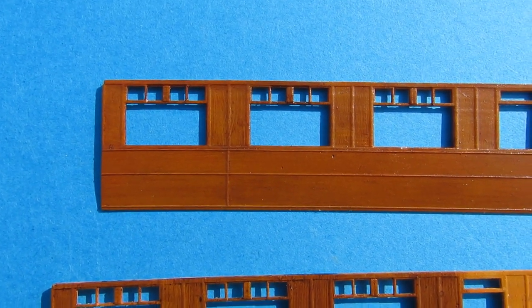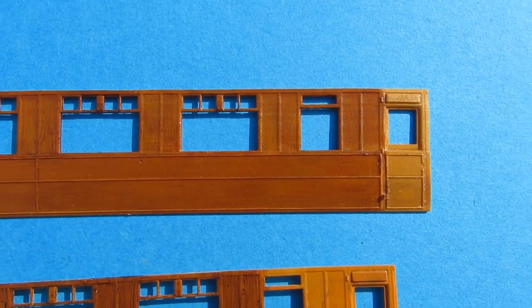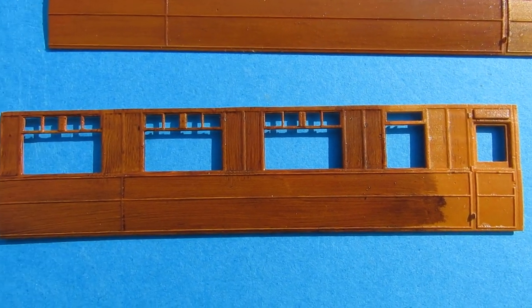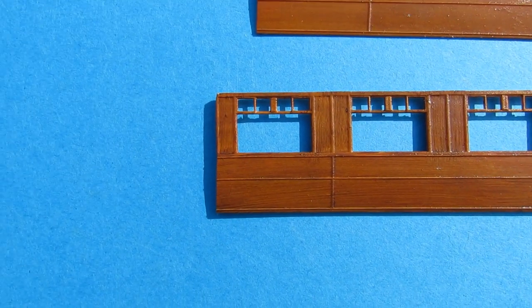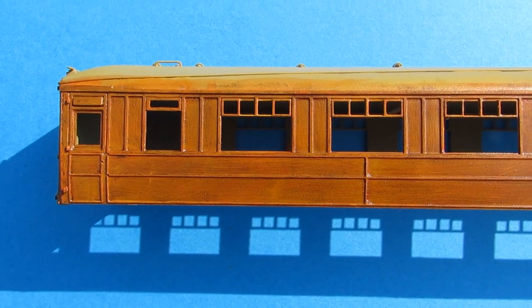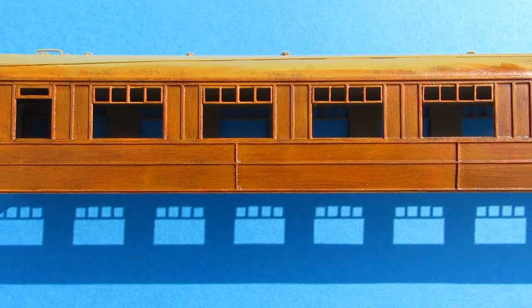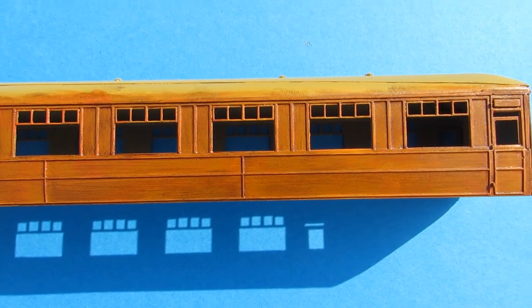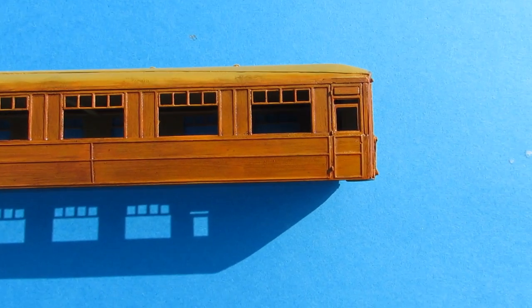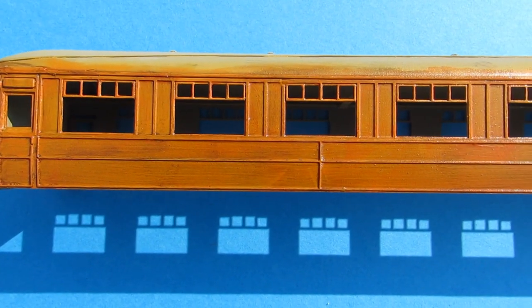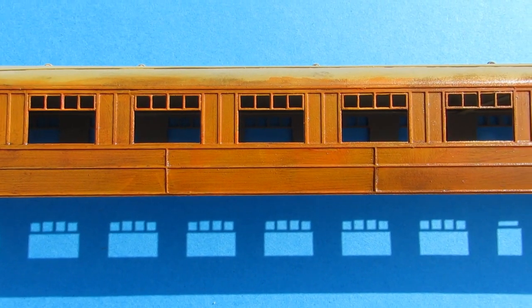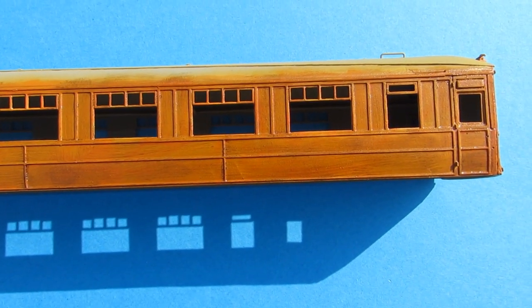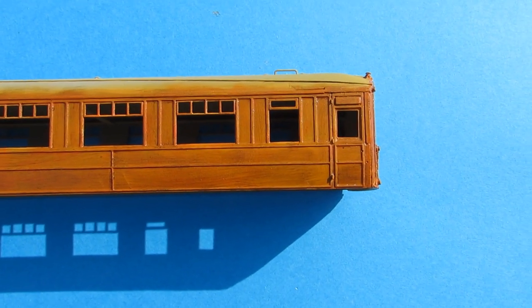On the top you have the burnt umber version, and below it the Van Dyke brown. Knee of the finished coach. As you can see the detail still shows, hasn't been obliterated. So it doesn't look as if it's been painted with a tile brush.